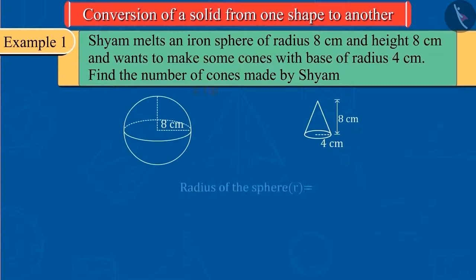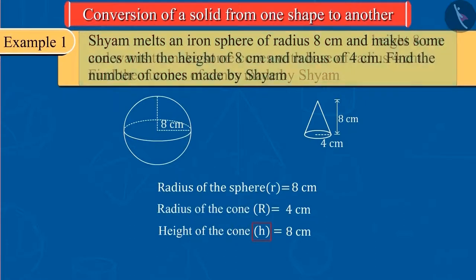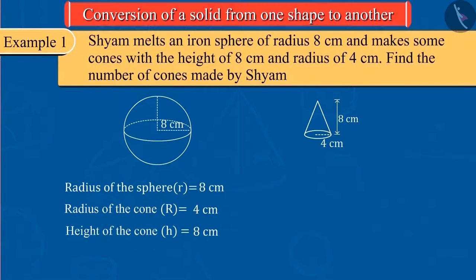From the question, let us consider r as the radius of the sphere and let r be the radius of the new cones formed. Height is h. So now, can you calculate the number of cones made by Sharm?